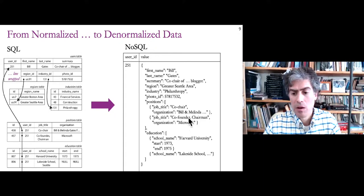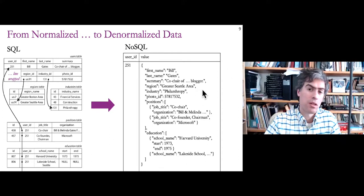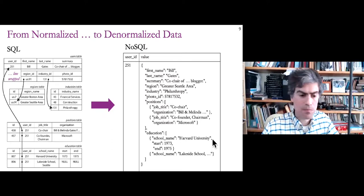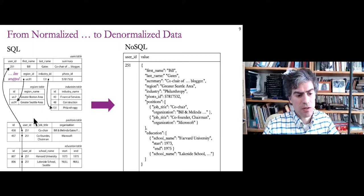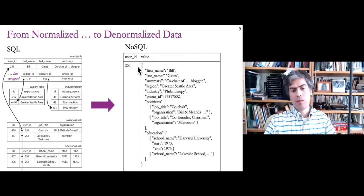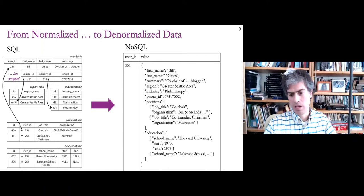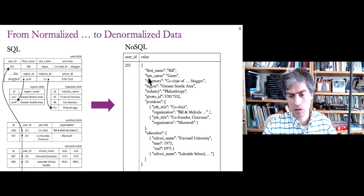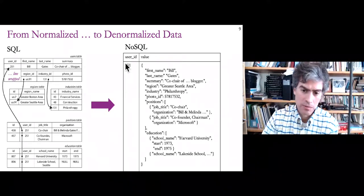Instead of lots of rows and lots of columns, we have one row with essentially two columns: a key and a value. NoSQL databases are key-value stores — dictionaries that map from a key to a value. The value stores a lot of denormalized data, often represented as JSON. This user ID 251, previously a primary key in a table, is now the only key. If we want to look something up, we use the user ID key to find it.